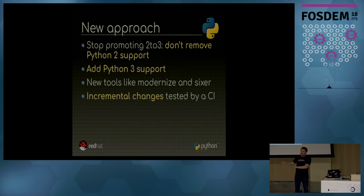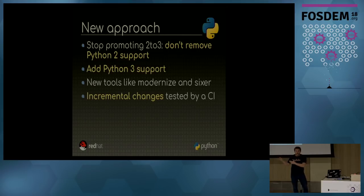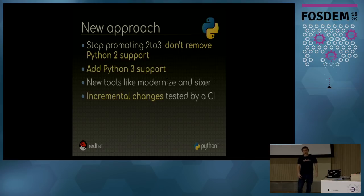Maybe the first approach of dropping Python 2 was not a good idea. Slowly, a new idea came up, but it took a lot of time to understand that it was a mistake — it took time to listen to users and developers. So it took a few years to come up with this new approach. Instead of promoting 2to3, which was not a good idea, we should stop dropping Python 2 support. Maybe a better idea is just to add Python 3 support. By doing that, a lot of things change — the migration is not a single shot. You don't have to port your whole application at once to Python 3. You can do it by small pieces, one by one. You can work on a single directory, you can port a single dependency, and by doing that you can also check for regressions on Python 2 if you have tests and a CI running.